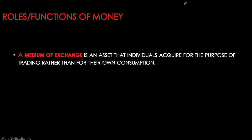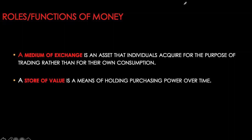Before we go to money aggregates and see how we quantify money in our economy, let's first look at these three main functions. The first is that the asset should be a good medium of exchange — meaning that asset should be universally accepted as a form of payment in that particular economy. The asset should not be sought for its own consumption but primarily for the exchanging of goods and services.